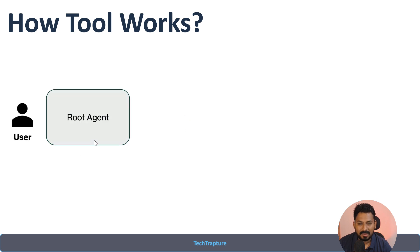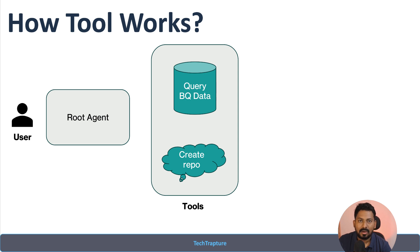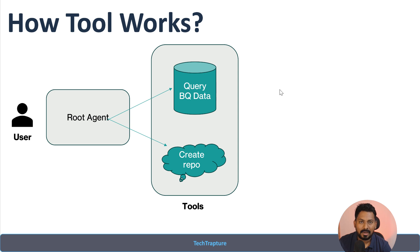Now let's see how a tool works. There is a root agent and the user interacts with it. We have two tools attached to the root agent — one to query BigQuery data and one to create a GitHub repository. But how does the agent understand which tool to use? There are certain steps involved at the backend when your agent decides which tool to use.